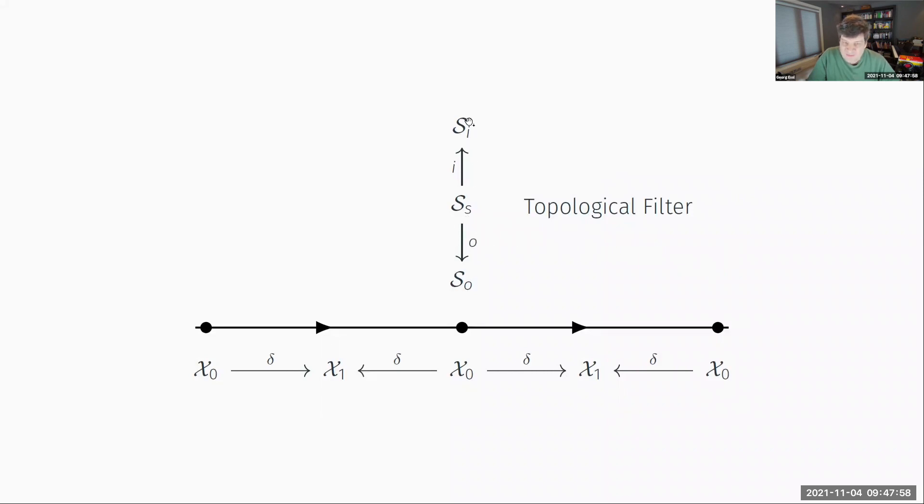You see, we actually have split up our data into three types, three instances here, and they actually are connected by maps. The reason why this is a topological filter: we have some notion of an input data here, some notion of a state, and some notion of an output.